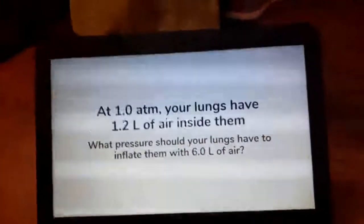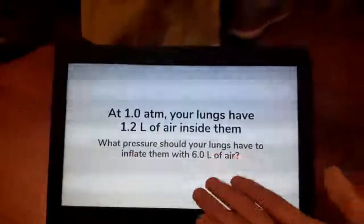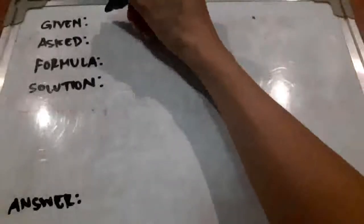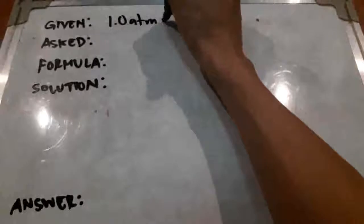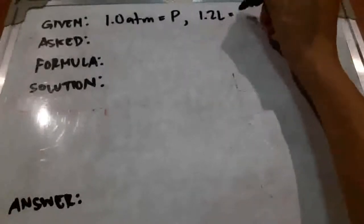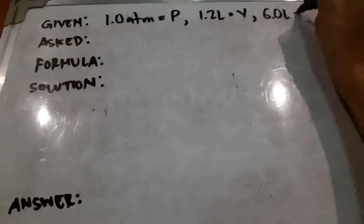Now here we can see that there are some quantities that we see. We have 6.0 liters, 1.2 liters, 1 atm. These are the things that we have to figure out how they fit in in our given. So when we use our GAFSA format, make sure to get all of the variables, all of the quantities that are mentioned. So one of the quantities mentioned is 1.0 atm. Atm is a unit of pressure, so we know that it's a form of pressure. So we have one pressure given. Now, we have another quantity, 1.2 liters, and liters is a unit of volume. And finally, the last number that is given in this problem is 6.0 liters, which is also volume.